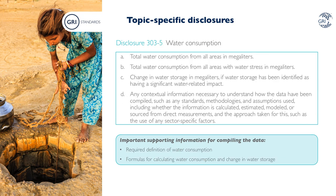The last topic-specific disclosure, Disclosure 303-5, is new to the standard. It requires organizations to report total water consumption from all areas and separately total water consumption from areas with water stress. Some companies may have operations that require putting significant volumes of water in storage such that it is not available for use by others in the reporting period. In these instances, organizations are required to report the figure for the change in water storage. This requirement may not be applicable to the majority of reporting companies, in which case they can report reasons for omission. As calculations of water consumption can vary greatly between sectors, organizations must report any contextual information necessary to understand how the data have been compiled, including standards, methodologies and assumptions used, and whether the information is calculated, estimated, modeled or sourced from direct measurements.